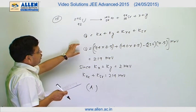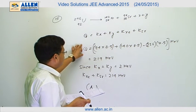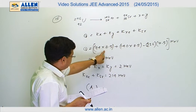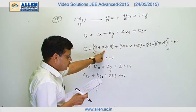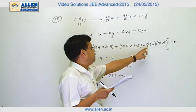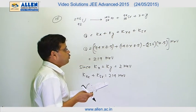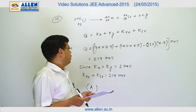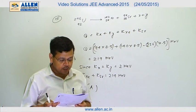We can also calculate Q value by finding the difference in binding energy, that is 94 times 8.5 plus 140 times 8.5 minus 236 times 7.5 as it is given in the problem, which turns out to be 219 MeV.